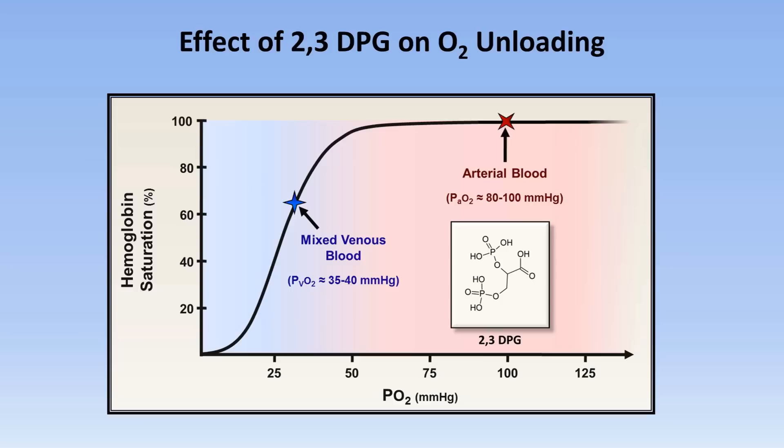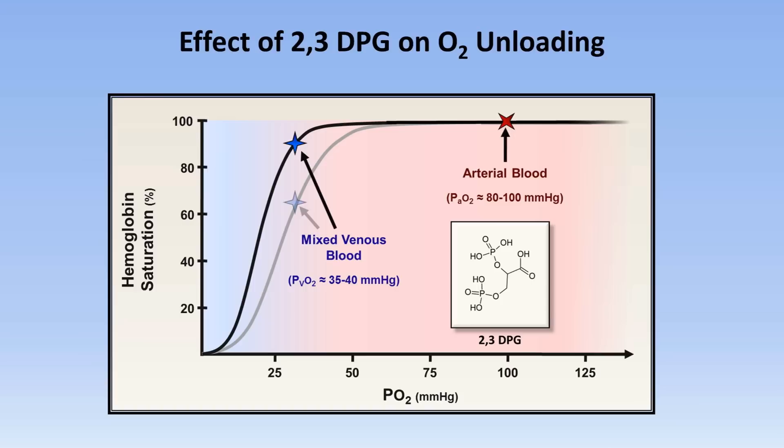Here's our molecule of 2,3-DPG. The effect of a low concentration of this in the red blood cell is an increase in the affinity of hemoglobin for oxygen, which shifts this curve to the left. With the curve shifted to the left, the venous blood's partial pressure of oxygen remains close to constant, the venous saturation is higher, and the difference between venous saturation and arterial saturation is less. Therefore, less oxygen has been unloaded in the capillary bed, and tissue hypoxia and ischemia must ensue.